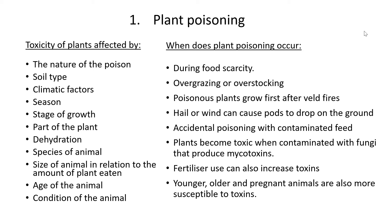Also whether the plant is dehydrated — if the plant has been dried out it could be more toxic because there's no water inside the plant to dilute the poison. Then also the species of animal, as some are more susceptible than others. The size of the animal matters too — a large animal like cattle can handle more poison before dying, whereas a small amount can easily kill a rodent. Same thing for young animals versus adult animals, plus the age and condition of the animal.